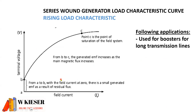The series-wound generator has a rising load characteristic curve. The reason for it starting at a certain point on the curve is because of residual magnetism. We have a steep curve but eventually it does start to drop off. Series-wound generators are used as boosters for long transmission lines.